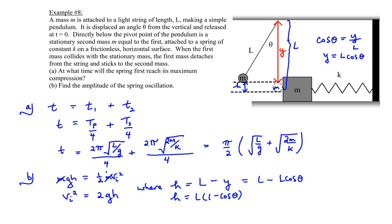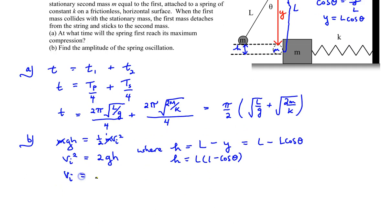And so H equals L(1 - cos θ). So therefore, the initial velocity is equal to the root of 2GL(1 - cos θ).